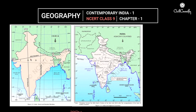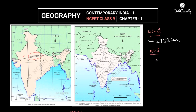Looking at the maps of India, some important things to note: the latitudinal extent from west to east is 2,933 kilometers. From north to south — Kashmir to Kanyakumari — it is 3,214 kilometers.